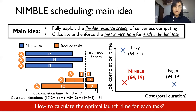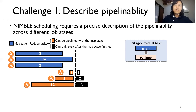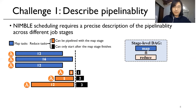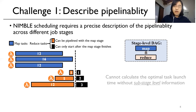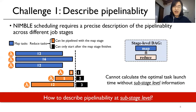We find the calculation non-trivial due to two challenges. The first is that Nimble scheduling requires a precise description of the pipeline-ability across different job stages. A job can be described as a stage-level DAG — for example, a MapReduce job as a Map stage followed by a Reduce stage. However, even for this simple MapReduce job, there are parts of the Reduce execution that can be pipelined with the Map stage, and parts that can only start after the Map stage finishes. Without such sub-stage-level information, we cannot calculate the optimal task launch time. So the first challenge is how to describe pipeline-ability at the sub-stage level.